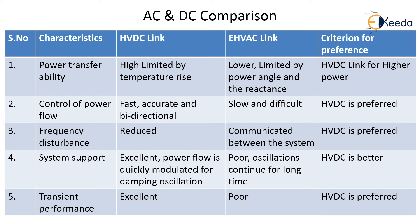Regarding frequency disturbance, HVDC reduces frequency disturbance between interconnected systems, whereas in EHVAC frequency disturbances are communicated between the two connected systems. For system support, HVDC is excellent — power flow is quickly modulated to damp oscillations. In EHVAC, system support is poor and oscillations continue for a long time, which creates stability problems. In both cases HVDC is clearly the better option.